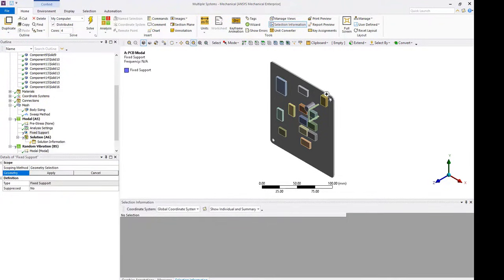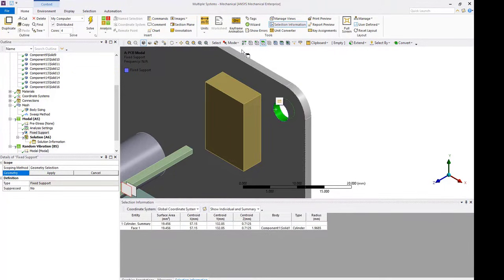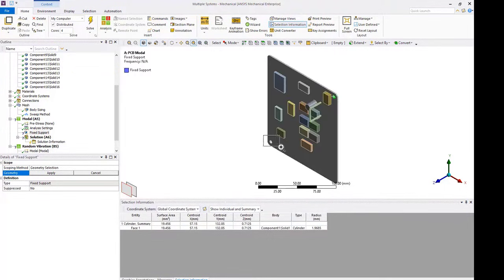Before running the modal analysis, we need to insert fixed supports on the two holes located at opposite ends of the board.